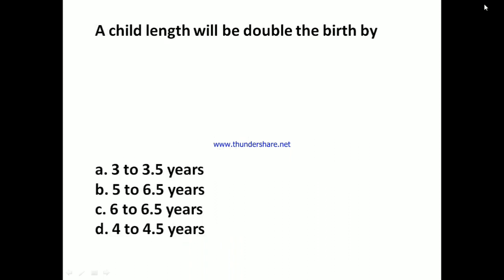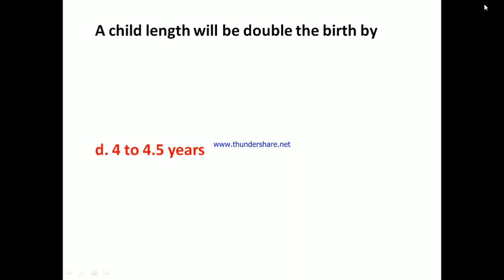Child length will be double the birth length by which age? A: Three to 3.5 years, B: Five to 6.5 years, C: Six to 6.5 years, D: Four to 4.5 years. The answer is D: Four to 4.5 years.